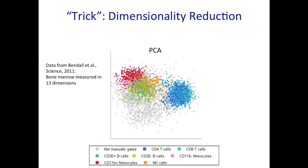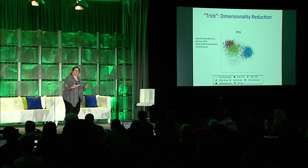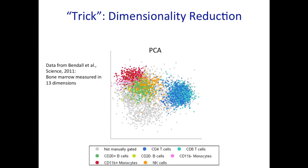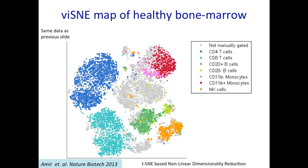Here's data collected at Stanford at the Nolan Lab: bone marrow with 13 different markers. We could take linear dimensionality reduction, find the most important dimensions, and map it down from 13 dimensions to 2. You see that different cell types — each color represents a different cell type — sort of segregate, but you don't really get a nice separation. Because the immune system and any other cellular system is nonlinear, if we take a nonlinear dimensionality reduction, we actually get a real separation.